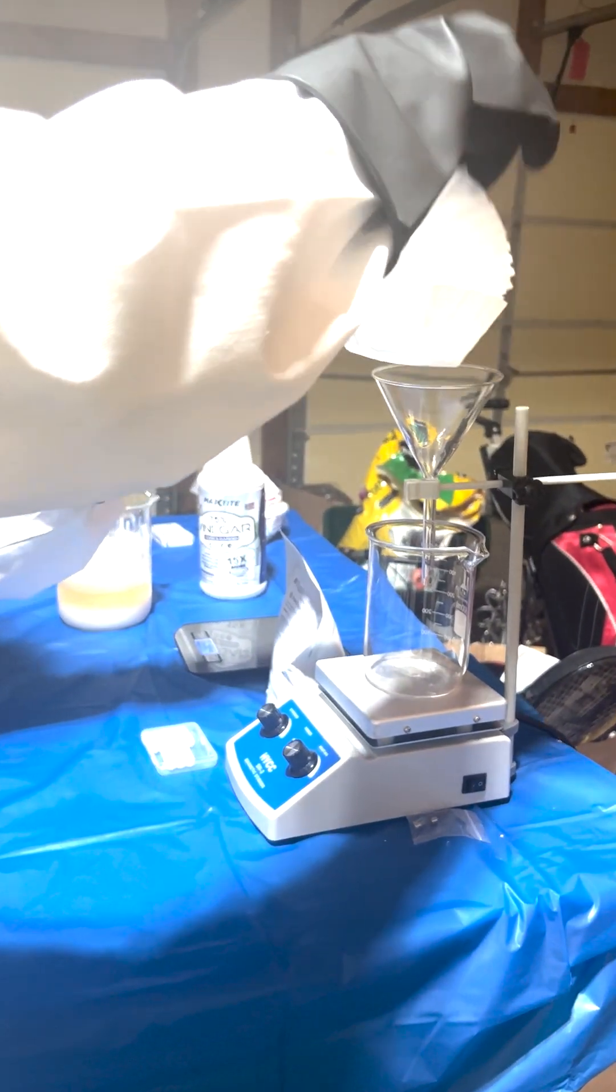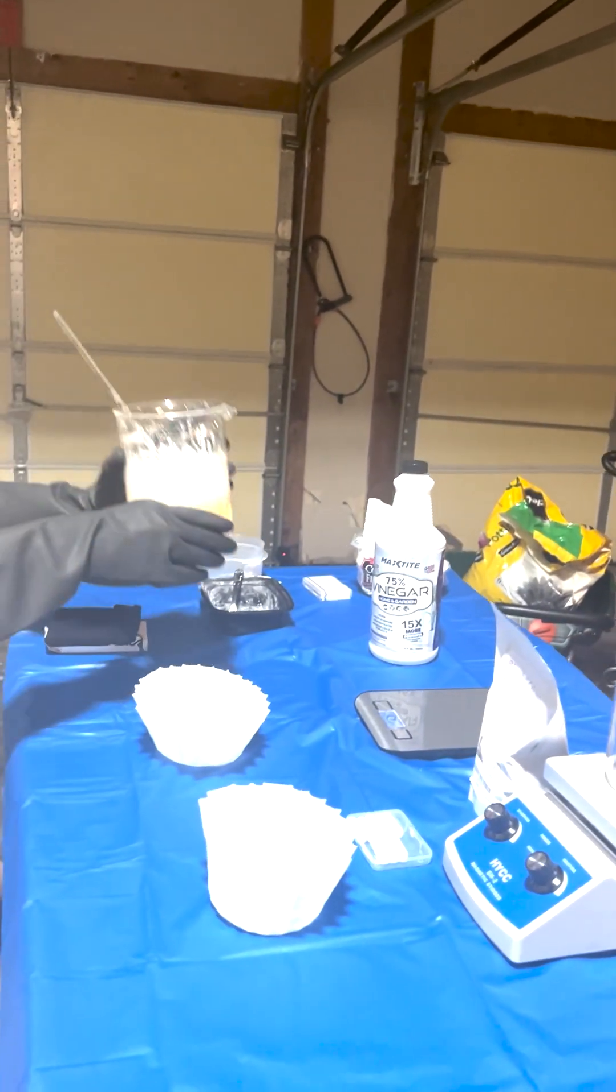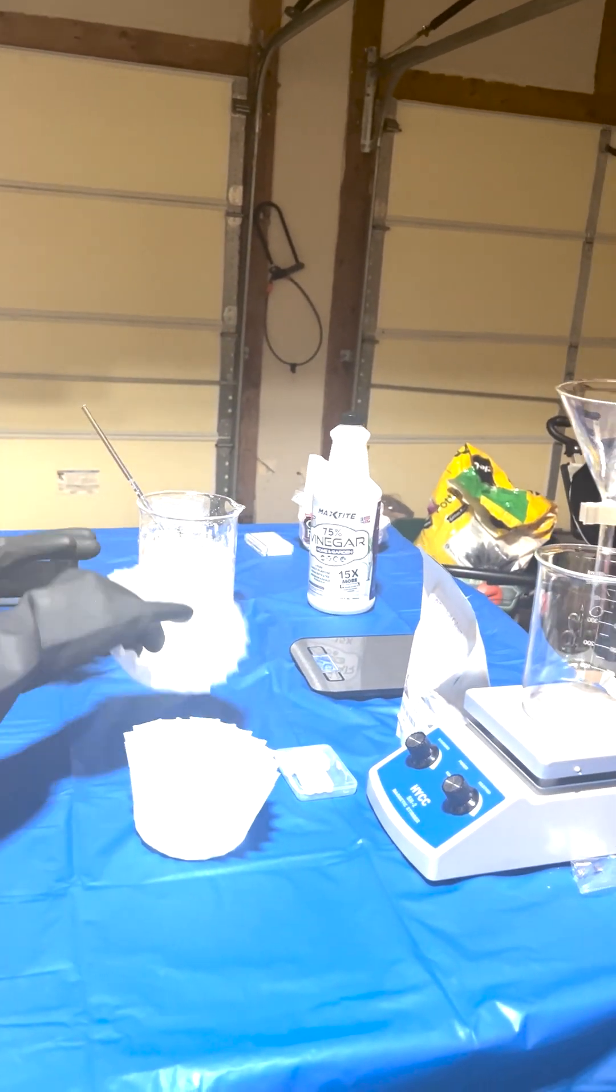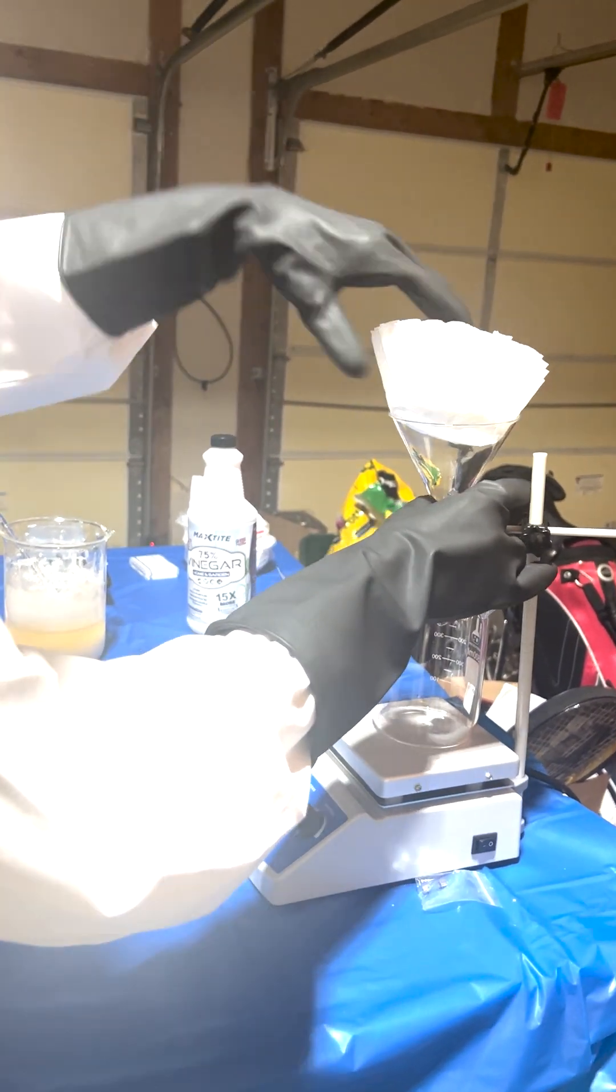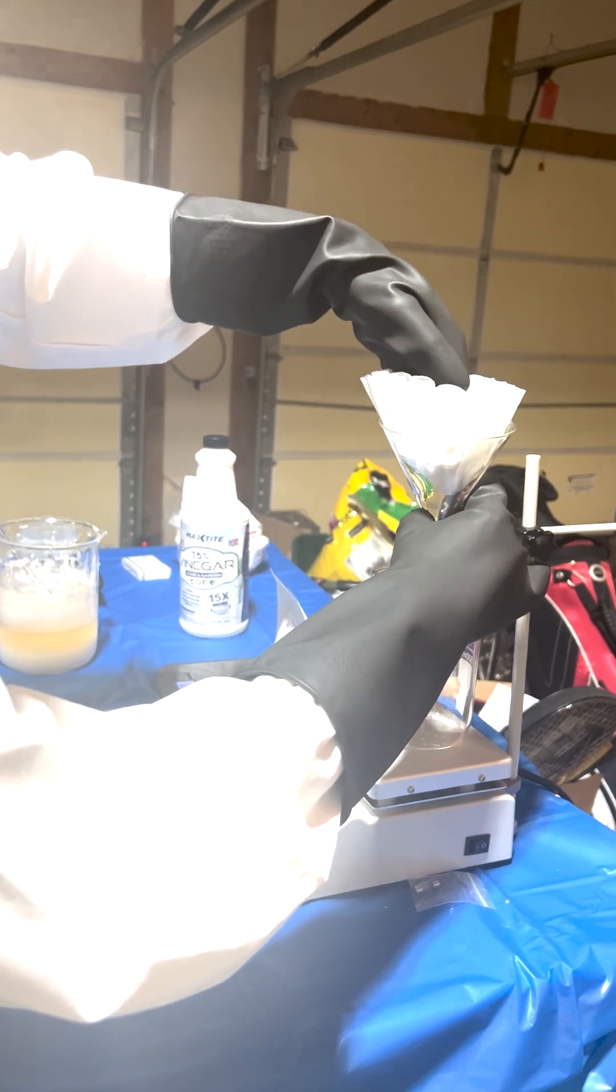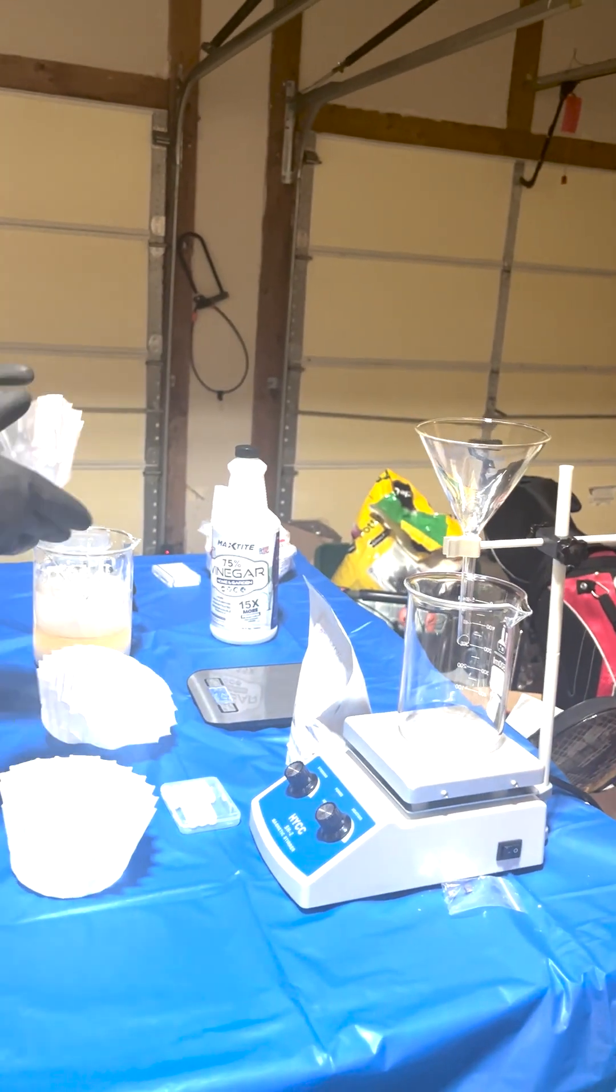Right now, all we're doing is filtering only the aqueous part of this solution out, and then we'll get rid of the remaining eggshell powder, because theoretically, all of the reactions should have occurred by now, and all we have to do now is extract our calcium acetate from it.